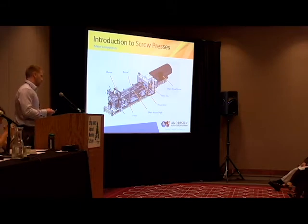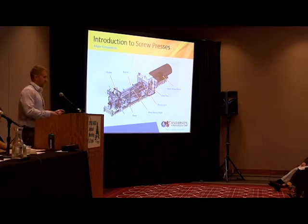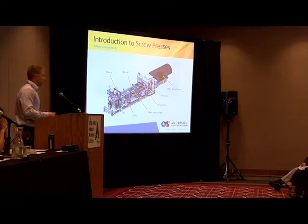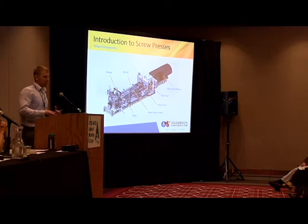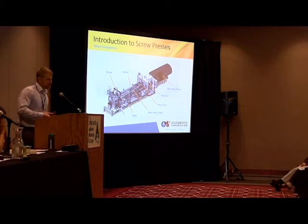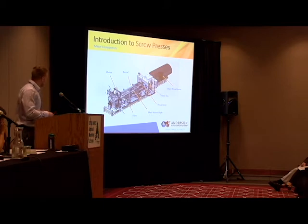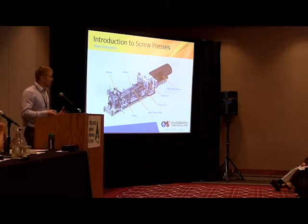The gearbox transfers force to the shaft, which then does work on material in the process. As we know from Newton, when you apply a force to an object, it applies an equal force in the opposite direction — that is the thrust force generated in all screw machines. To counteract that force, all screw presses have a thrust unit with a thrust bearing; without it, you'd push that shaft out the back of the press. You then have a drainage cage whose goal is to keep solids inside while allowing as much liquid out as possible. At the end, most screw presses have a choke or some means to control the final overall pressure, though newer machines often use fixed chokes due to cost sensitivity.